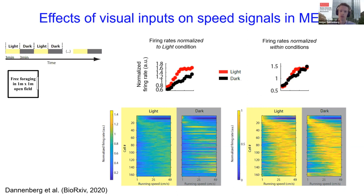When we normalized the speed tuning curves within conditions, the normalized curves looked very similar across light and dark conditions. Normalizing firing rates within conditions therefore demonstrates that those changes in the slope of speed tuning curves can be fully explained by changes in mean firing rates of neurons. Conversely, the running speed-dependent gain in firing rates of speed cells was not changed during darkness.